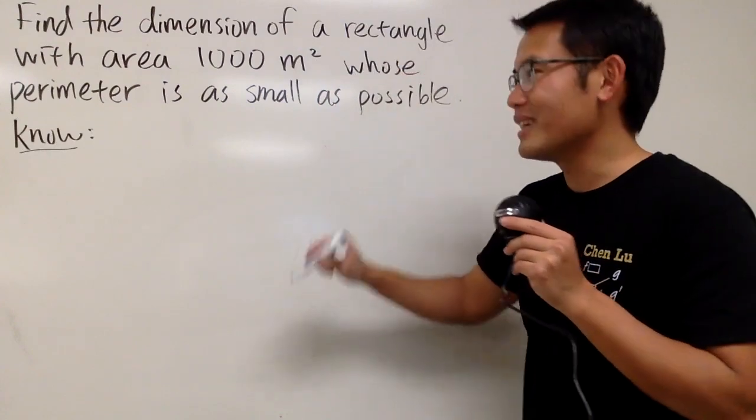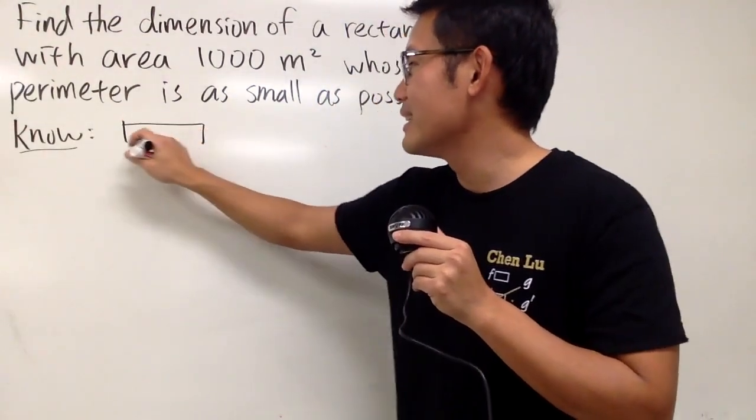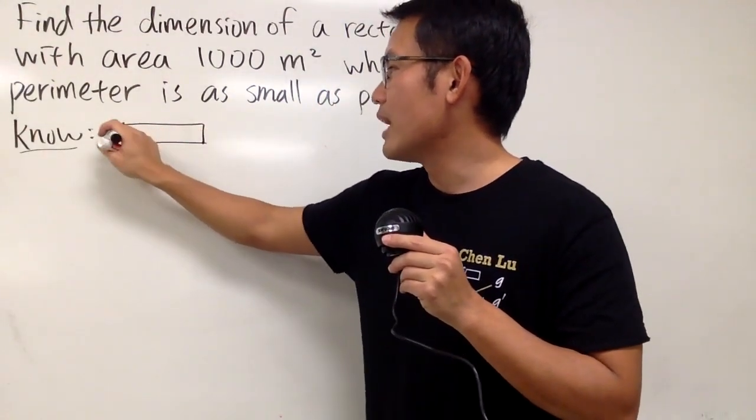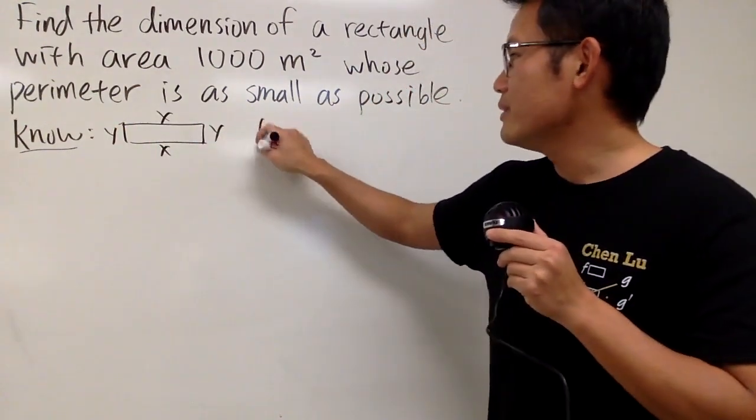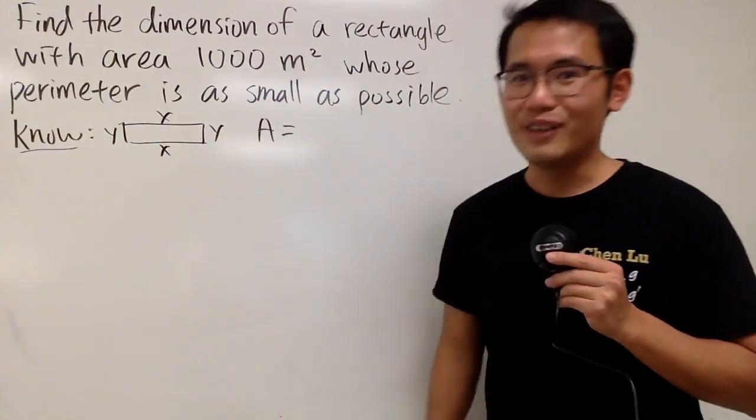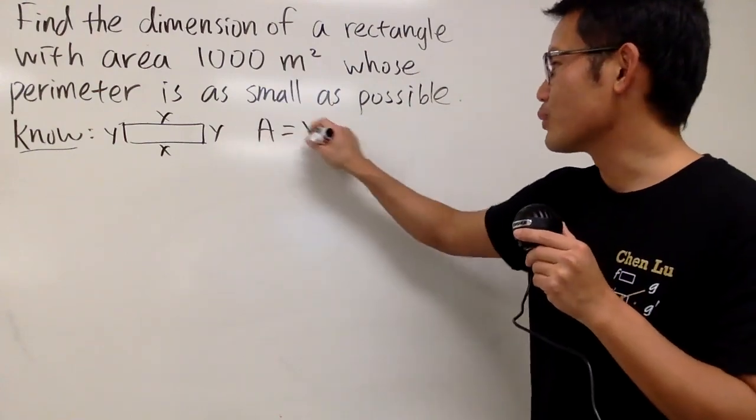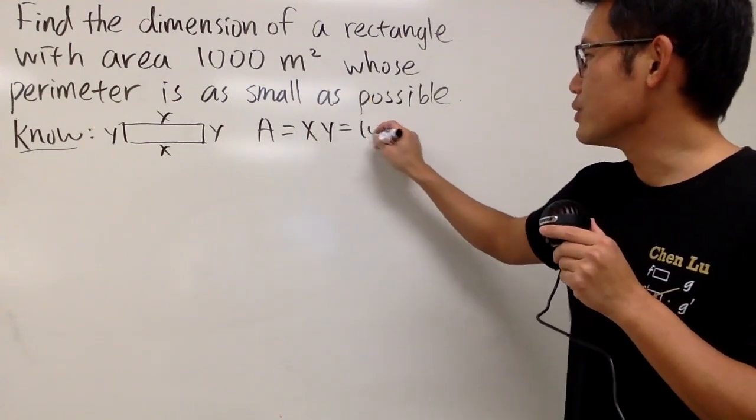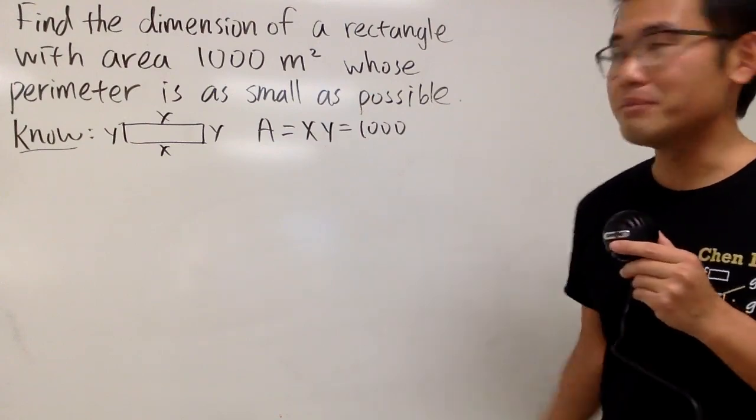We are still talking about rectangles, so I will draw that rectangle for you guys. Let's say it looks like this. I will put down y, x, x, y. And this time though, we know the area first. Area is of course x times y, and we want this to be 1000 right here. Because it says so.